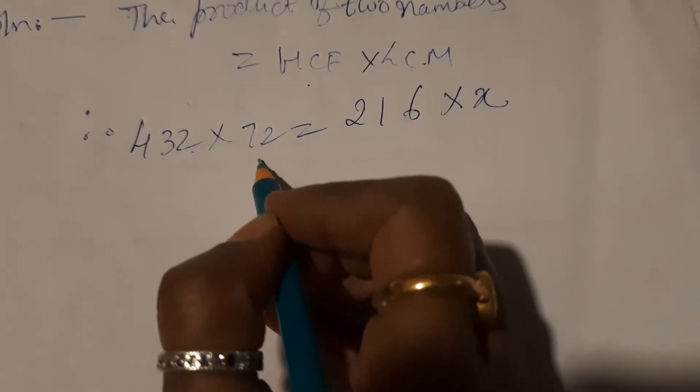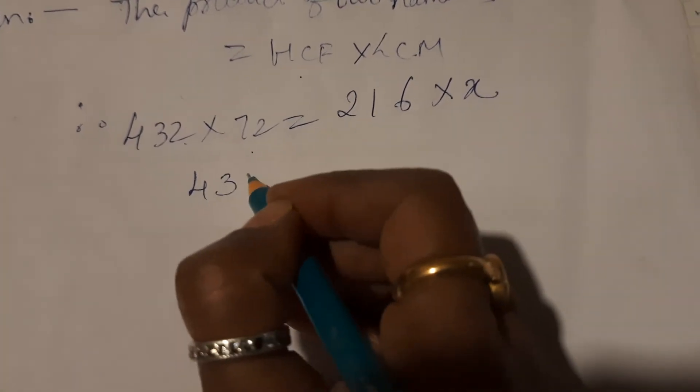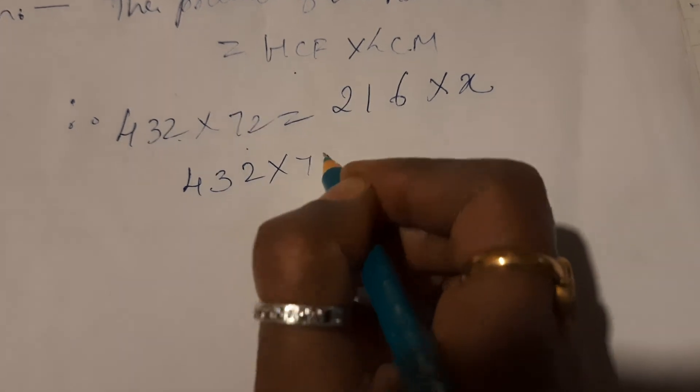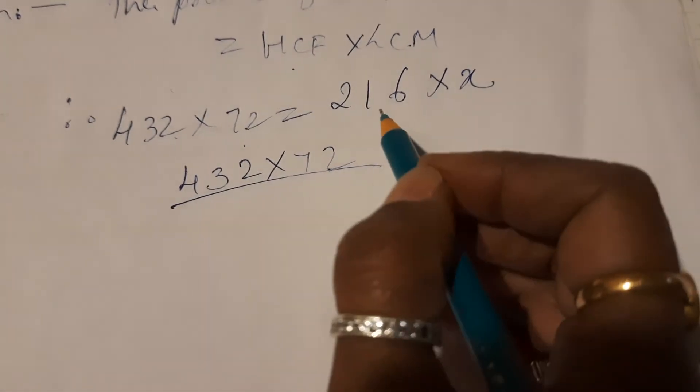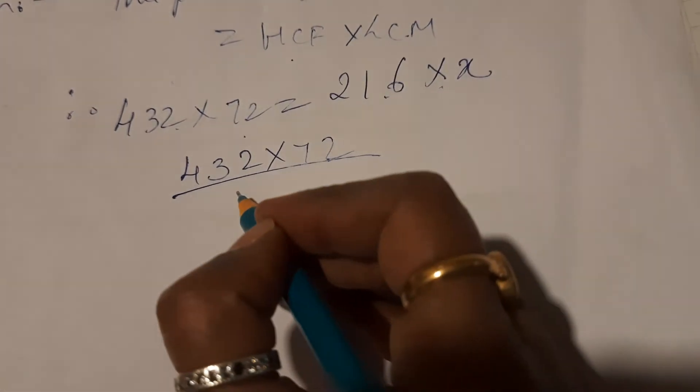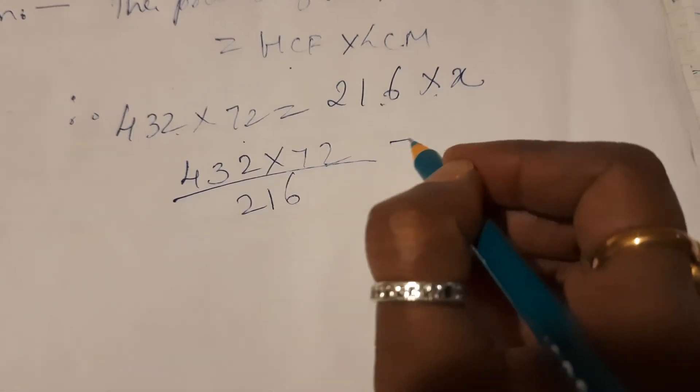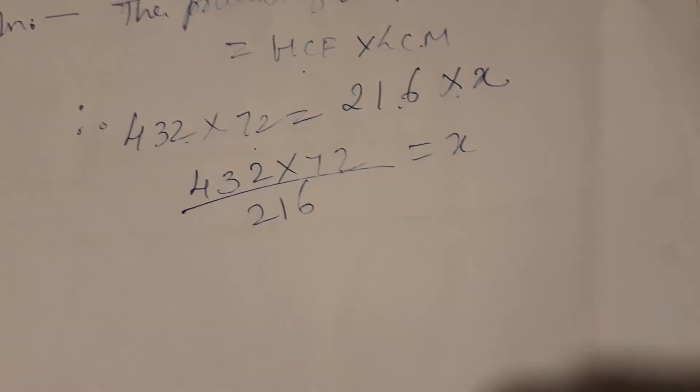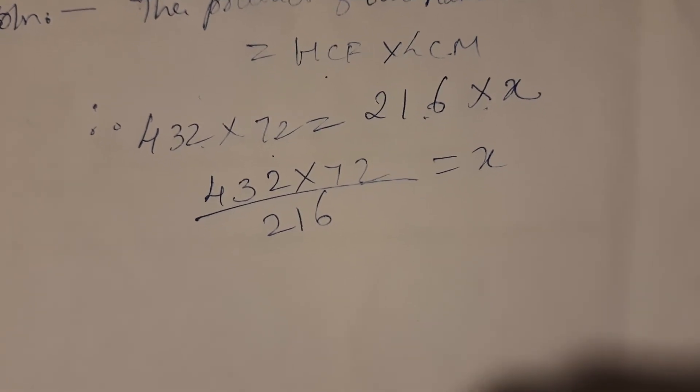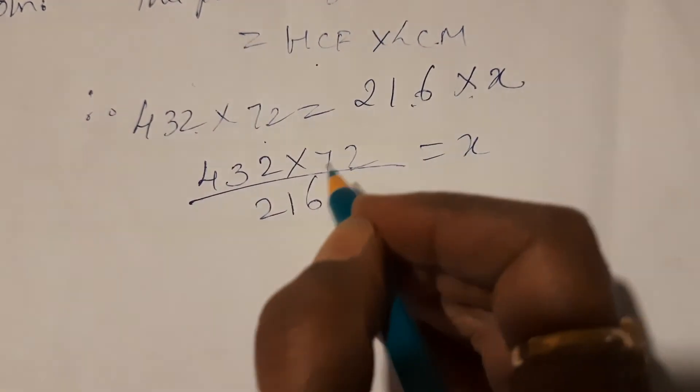So 432 into 72, it's no need of cancelling. You could just write like this: divided by 216. It's multiplied here; when it comes to this side it will be division, is equal to X. Now what we have to do, all the cancellations. You can use 2's table.